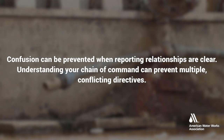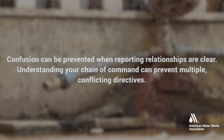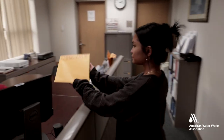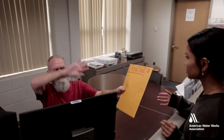Confusion can be prevented when reporting relationships are clear. Understanding your chain of command can prevent multiple conflicting directives. Chain of command is having a boss and understanding your report structure. It's an important element in the incident command system.